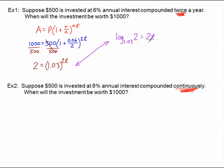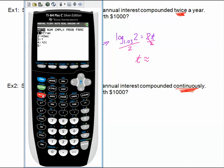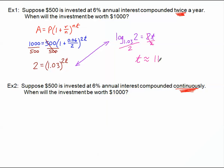t is almost solved for. All I would have to do is divide by two, and I'll have what t is. I need to do the log base 1.03 of two and then divide that by two. If you don't have the calculator that you can do this log base, then you will need to do the change of base formula, which is the common log of two divided by the common log of 1.03 and then divide that by two.